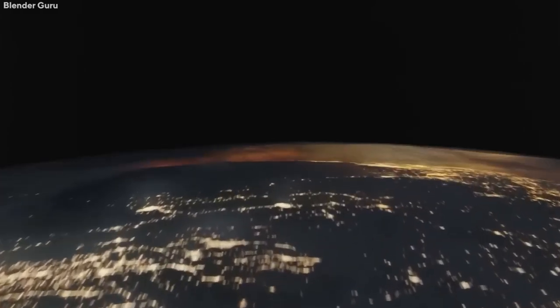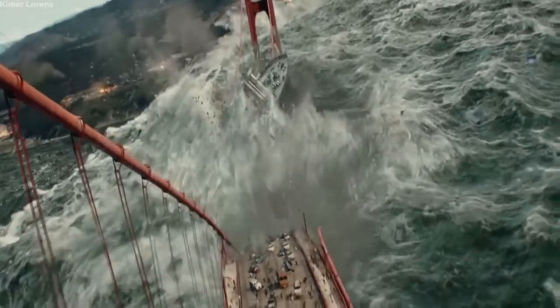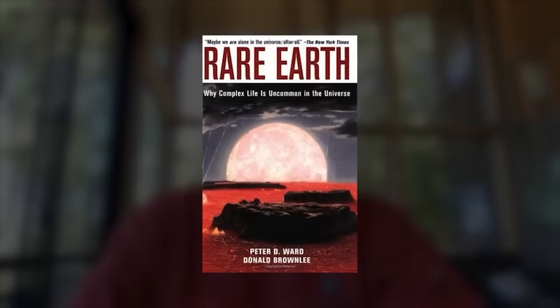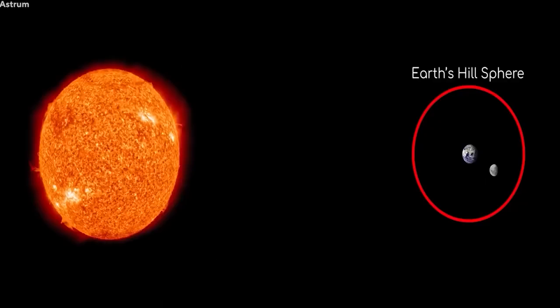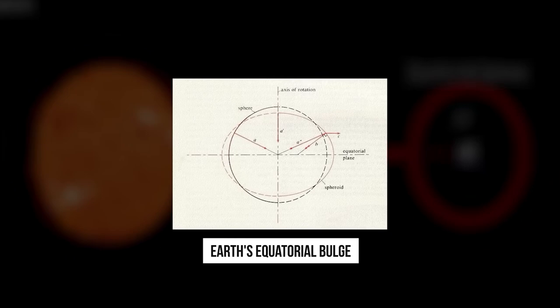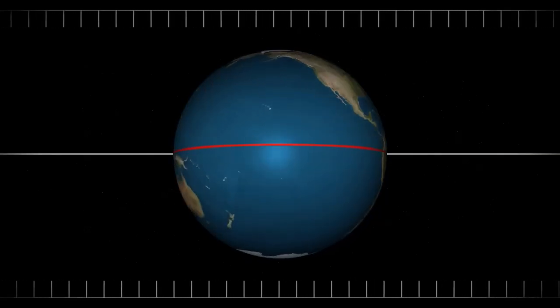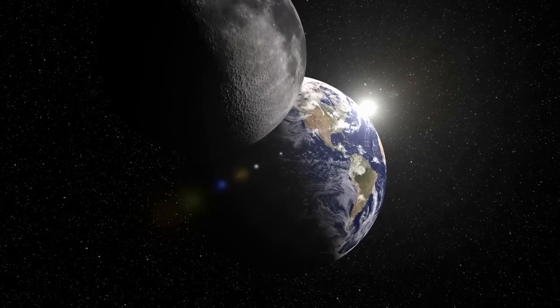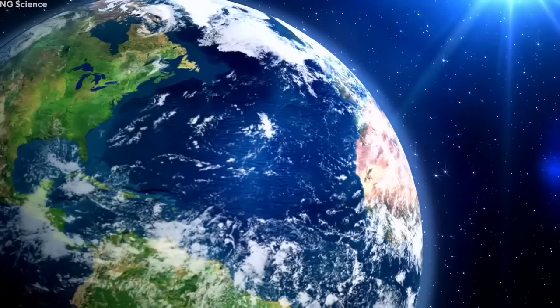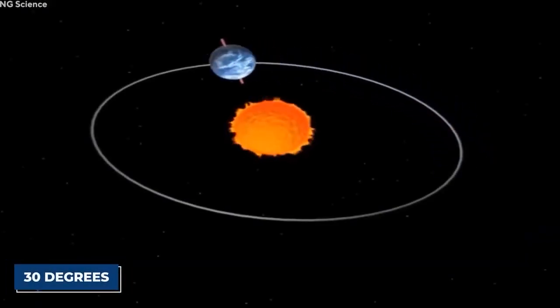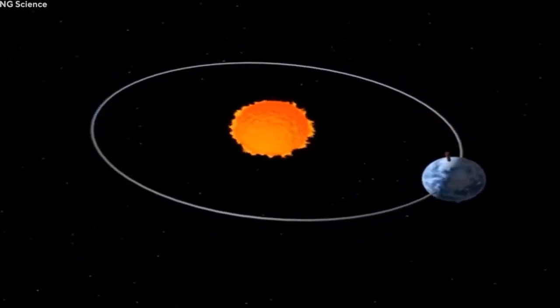Now let's turn to our Moon. Without the Moon, Earth's climate would most likely be far less hospitable to life. Some scientists believe life on Earth would be impossible without it. This theory was proposed in 2000 by astrobiologist Peter Ward and evolutionary biologist Donald Brownlee in their book Rare Earth. They hypothesize that the large and massive Moon exerts a torque on Earth's equatorial bulge, which stabilizes the planet's axis precession. Ward and Brownlee contend that if the Moon were not present, Earth's axis would oscillate by up to 30 degrees, resulting in much more pronounced climate fluctuations.